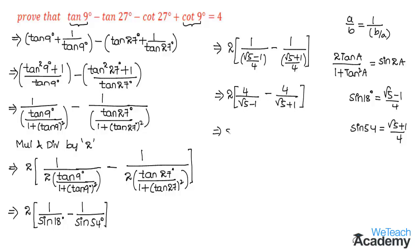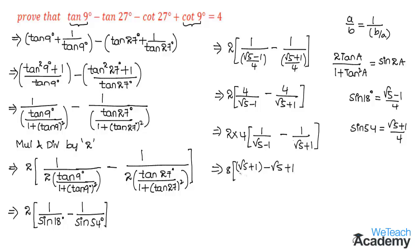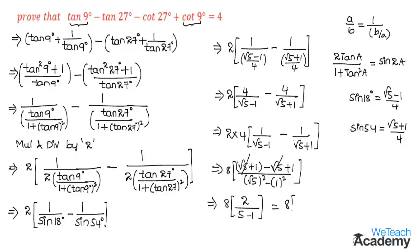Taking 4 as the common factor, we get 2 times 4 times [1 by (root 5 minus 1) minus 1 by (root 5 plus 1)], which is 8 times the LCM: root 5 plus 1 minus (root 5 minus 1) divided by (root 5 minus 1)(root 5 plus 1). The denominator is in the form (A minus B)(A plus B), giving A squared minus B squared, that is root 5 whole square minus 1 squared, which equals 5 minus 1 equals 4. The numerator simplifies: root 5 and minus root 5 cancel, leaving 1 plus 1 equals 2.